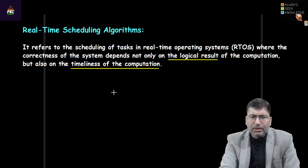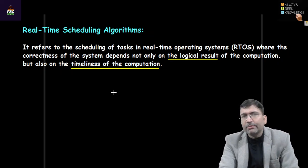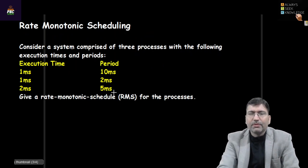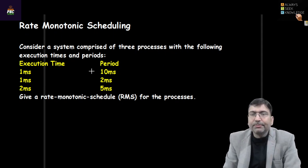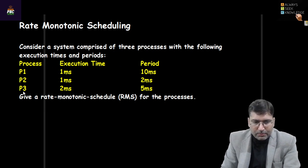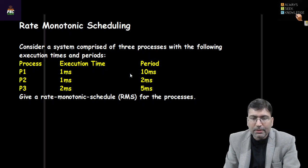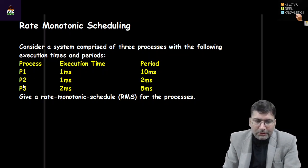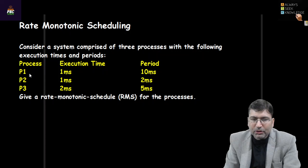Let's take a problem and solve it. In this particular type of scheduling algorithm — Rate Monotonic Scheduling — the priority is fixed. Priority will be decided based on the period, and here we consider the tasks or processes are periodic in nature. So let's say we have process IDs P1, P2, and P3. They require certain execution times, and then there is the period — these processes are periodic in nature.